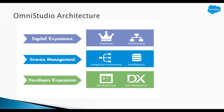Now let's come back to the presentation and discuss further. Next we have OmniStudio architecture. OmniStudio is a three-layered architecture which covers Digital Experience, Service Management, and Developer Experience. Digital Experience completely deals with the user interface — whatever we want to show to the user we can build here. We can say it is completely the front-end layer, where we design what data to show to the user and what inputs we want to take from the user.